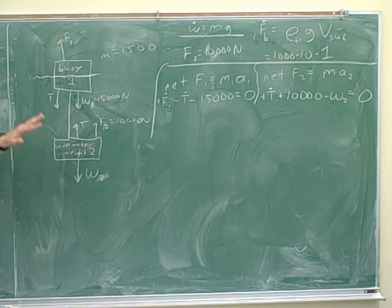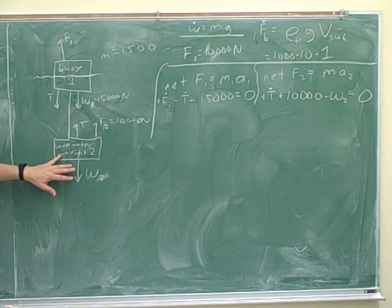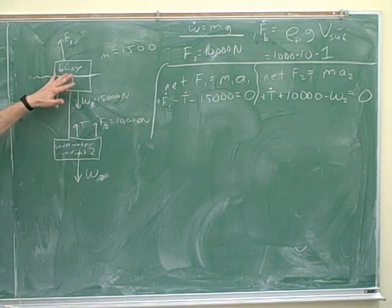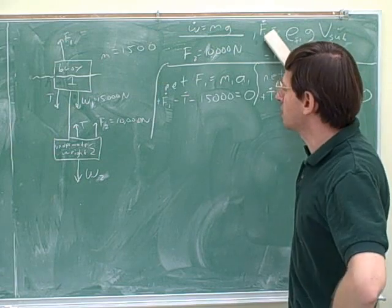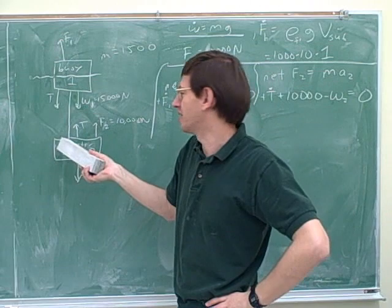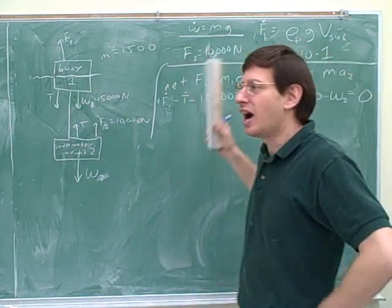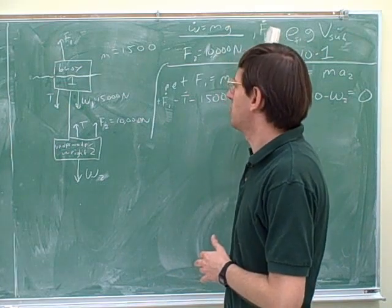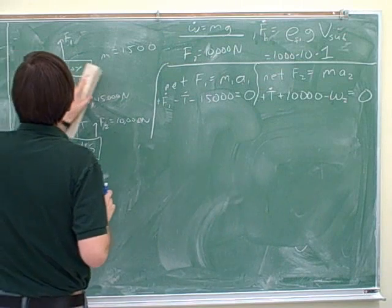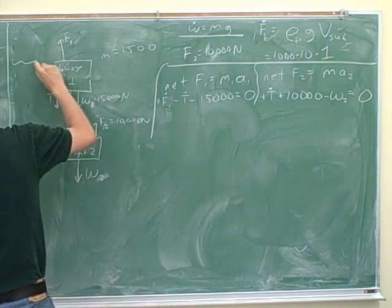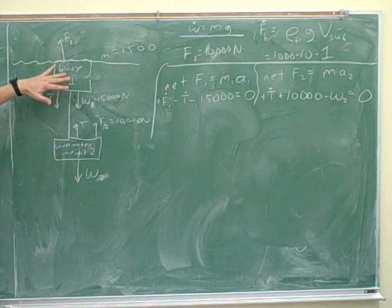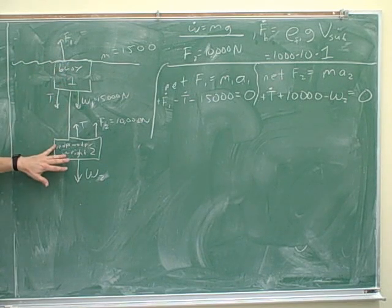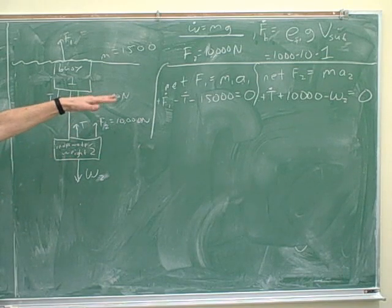If we keep adding weight, the buoy keeps sinking more and more until it's just entirely, just barely completely submerged — and now it's keeping up the greatest weight that it possibly could. Once it's entirely submerged, it can't increase its buoyant force anymore. What's really happening is: when we add more weight, we need a bigger buoyant force to keep things up, which means we have to submerge more of the top buoy. So what the picture really looks like in the borderline case is the buoy has fallen until it's just barely completely submerged.